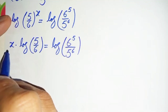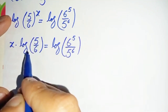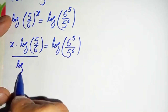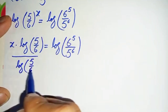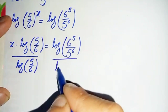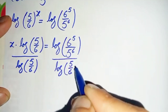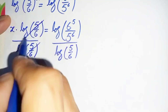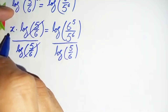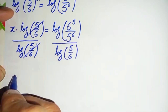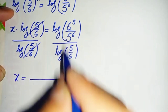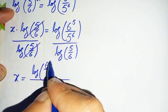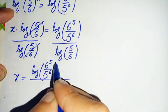Since we need to find the value of x, we will divide both sides by log of 5 over 6. On the left-hand side, log of 5 over 6 cancels, leaving only x. So x is equal to log of 6 raised to power 5 divided by 5 raised to power 6, all divided by log of 5 over 6.